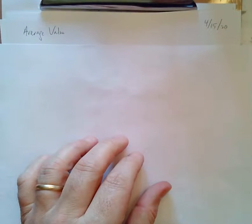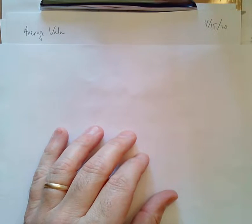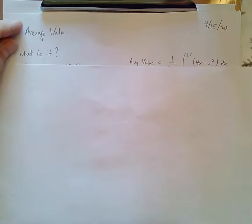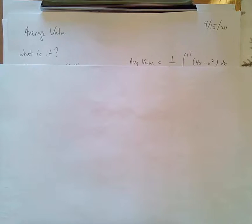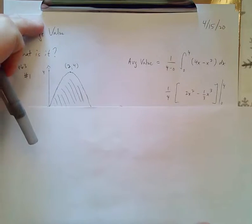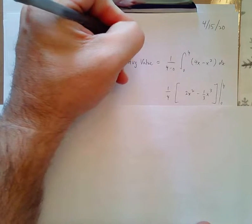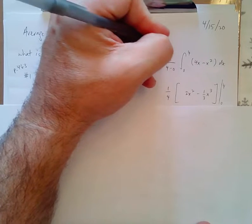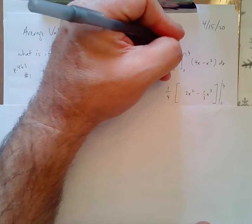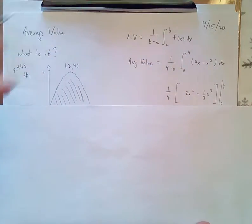This is what I'm trying to show you on the homework, and I probably should have showed you this first. This is average value, and I think that's an easier topic. So what is average value? It's essentially the average height of all of the heights inside an interval. The formula for it is 1 over b minus a times the integral from a to b of f of x dx.